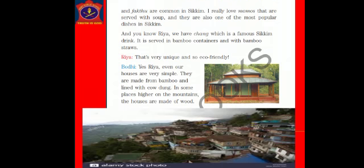I really love momos that are served with soup and they are also one of the most popular dishes in Sikkim. And you know Rhea, we have chhaang, which is a famous Sikkim drink. It is served in bamboo containers and with bamboo straws. Rhea: That's very unique and so eco-friendly! Bodhi: Yes Rhea, even our houses are very simple. They are made from bamboo and lined with cow dung. In some places higher on the mountains, the houses are made of wood.